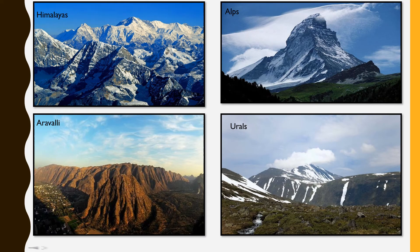Dear students, in this slide you will notice that the first picture is of Himalayan mountains. The second picture is of the Alps, and these two mountains are young fold mountains with rugged relief and high conical peaks. The third picture refers to the Aravali range in India, which is one of the oldest fold mountain systems in the world. The last picture refers to the Ural mountains in Russia, which have rounded features and low elevation. This is also a very old fold mountain.